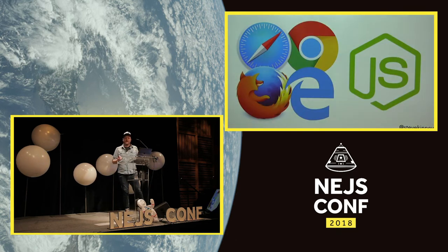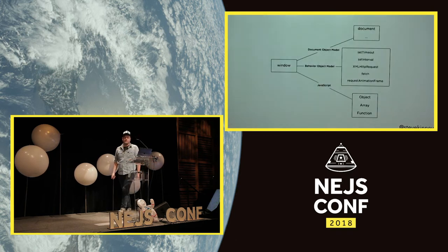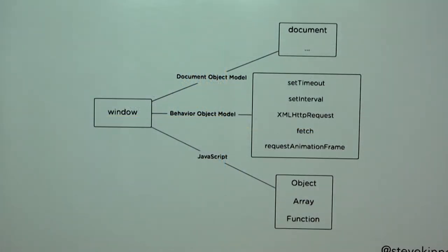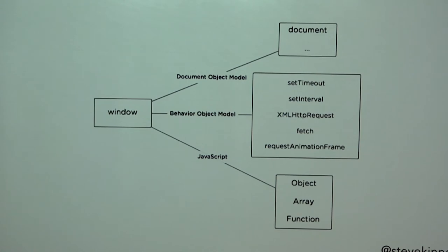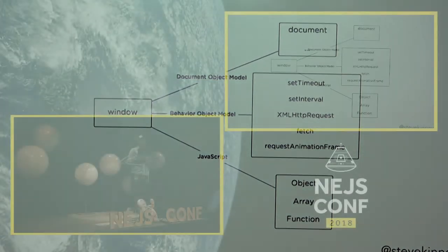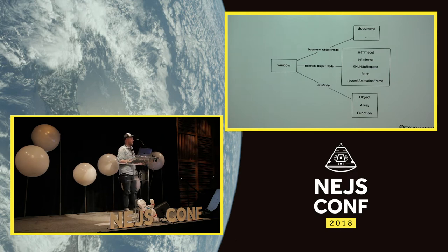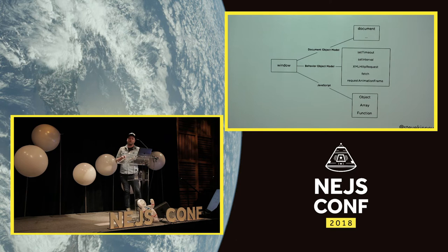The environment provides the window object with the whole DOM — separate from JavaScript itself. Then we have the Browser Object Model, which contains all the things we think are part of JavaScript but aren't in the ECMAScript spec: setTimeout, setInterval, XMLHttpRequest, fetch, requestAnimationFrame. Most of them are implemented in C or C++. If you look up setTimeout in Chrome DevTools it'll just say 'native code' because it's not actually JavaScript.